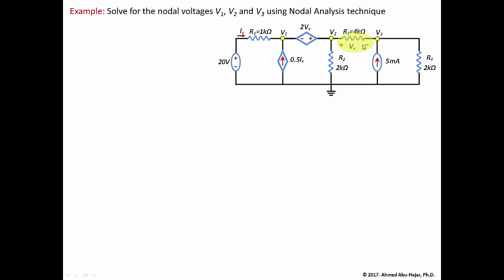Just follow the polarity — you can use KVL if you want, but once you've done it a couple of times, you know that vx equals the nodal voltage at the plus polarity minus the nodal voltage at the negative polarity. So we state that vx equals v2 minus v3.